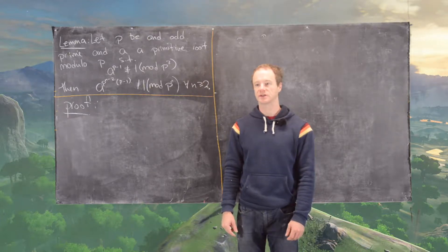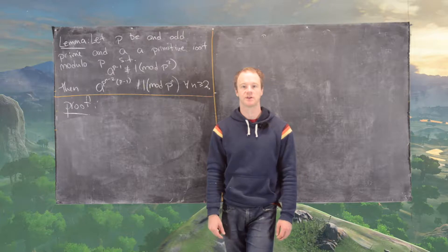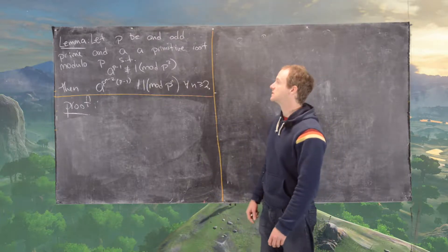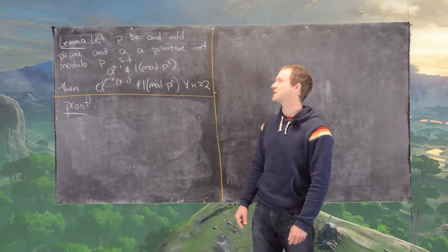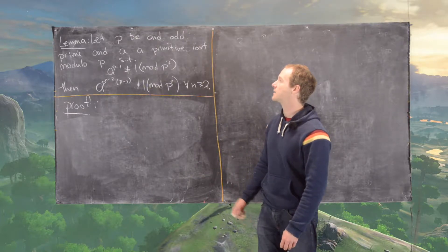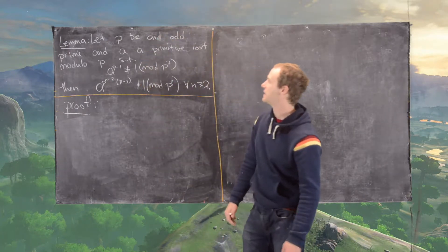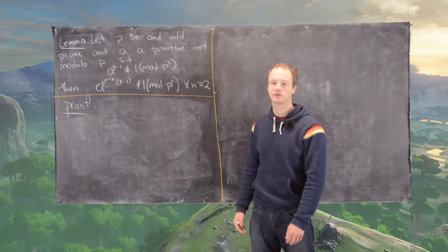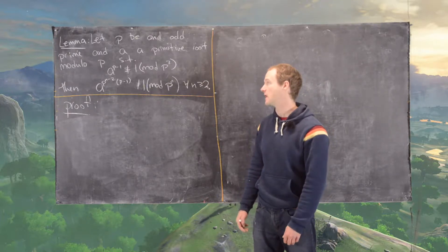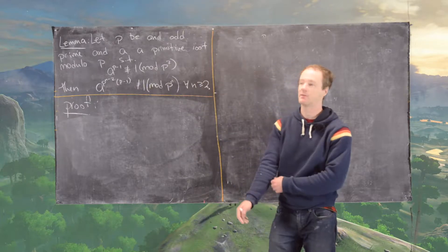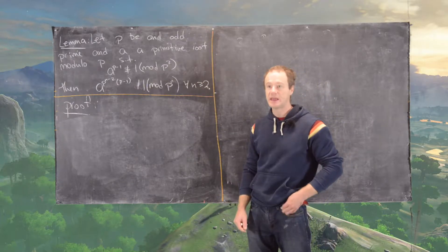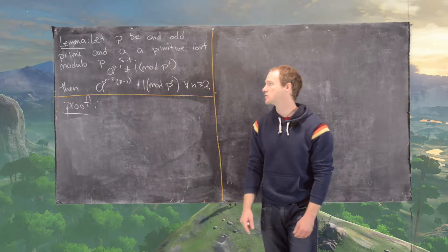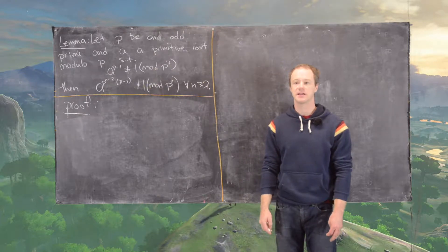Little by little, we're working towards classifying the natural numbers for which there are primitive roots and those which there are not. Our next result will be the following. Let p be an odd prime and a be a primitive root modulo p such that a to the p minus 1 is not congruent to 1 mod p squared — we just proved a result that it's possible to find that type of primitive root. Then a to the p to the n minus 2 times p minus 1 is not congruent to 1 mod p to the n, for all n greater than or equal to 2.